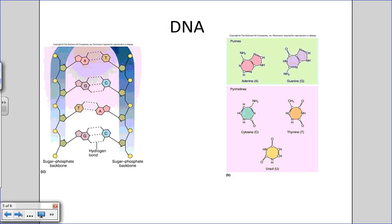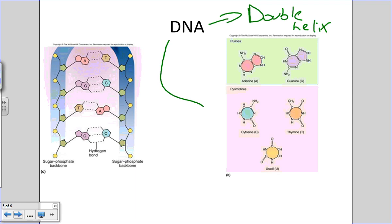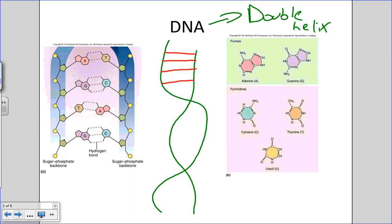Now let's look at the structure and composition of DNA. If we want to describe the physical appearance of DNA, we call it the double helix — which stands for twisted ladder. DNA is a double-stranded molecule. One thing about DNA is that it is a rather weakly formed molecule.